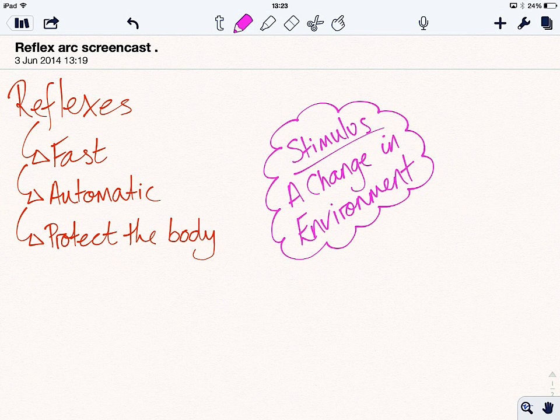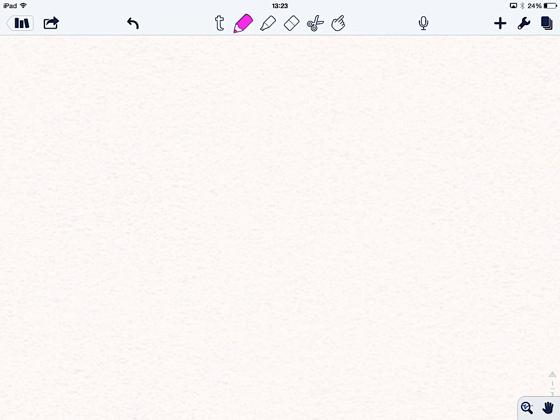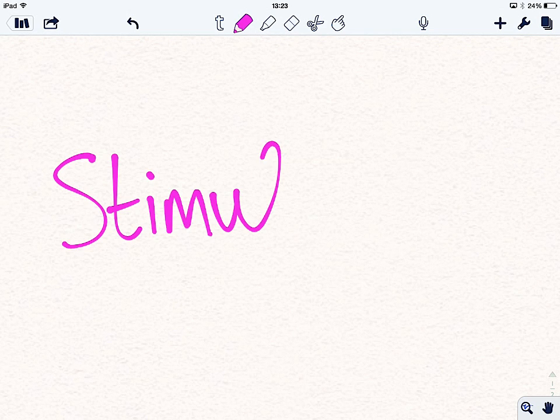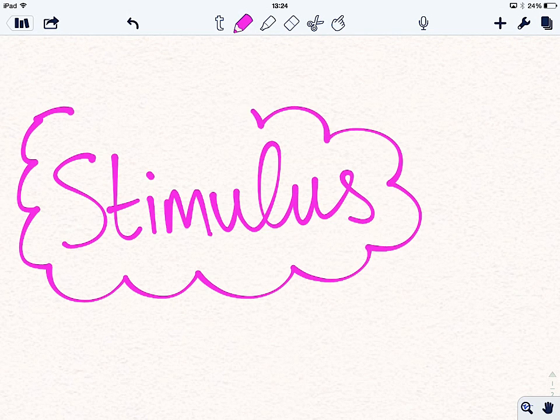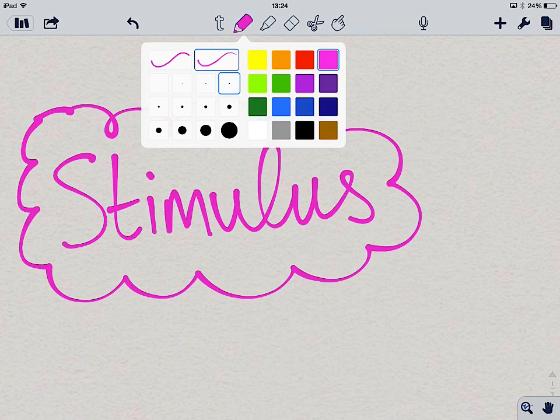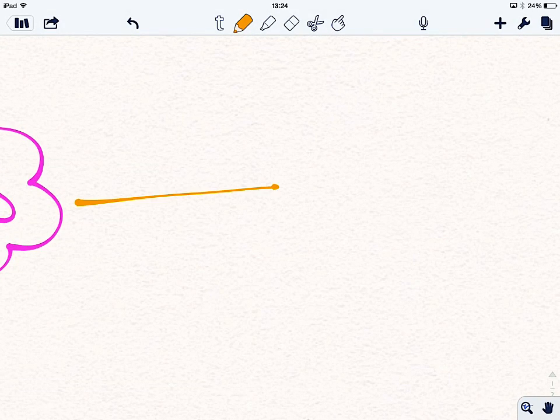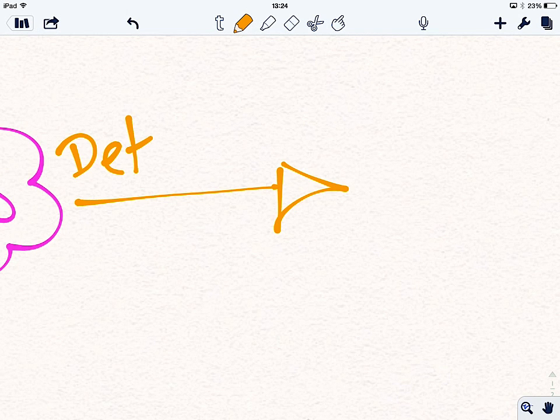So let's look at the reflex arc. Reflex arc starts with a stimulus, a change in the environment. So there's our stimulus. It doesn't matter what it is, but that's going to be detected. It's detected by special cells in your body known as receptors.